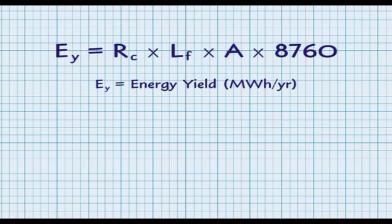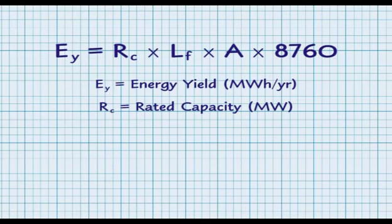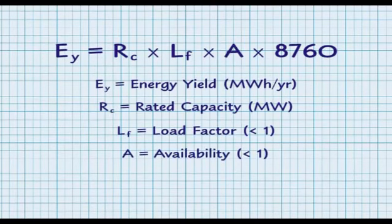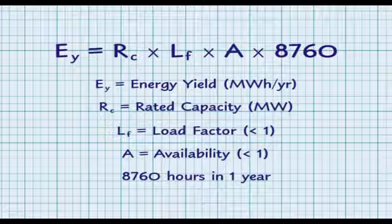Energy yield is equal to RC times LF times A, multiplied by the number of hours in a year. RC stands for rated capacity of the wind farm, typically in megawatts. LF is load factor — this accounts for the fact that the wind doesn't blow all the time, and hence we have a factor of less than one. A is for availability, which accounts for things such as reliability of the wind turbines and the time to repair them, so in a full year we won't have 100% availability due to mechanical failures.